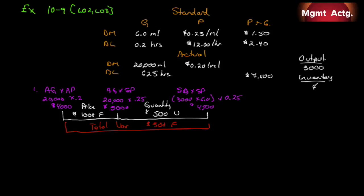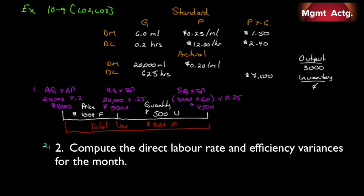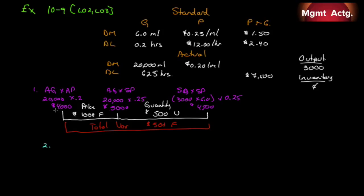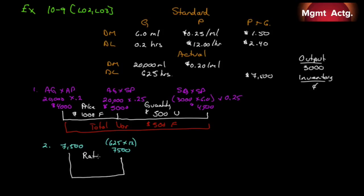Number two: compute the direct labor rate and efficiency variances for the month. For the rate variance, actual quantity times actual price is already given as $7,500. We compare that with actual quantity times standard price: 625 hours times $12 per hour also equals $7,500. So our rate variance is zero.